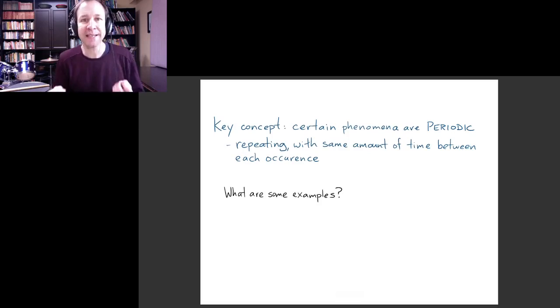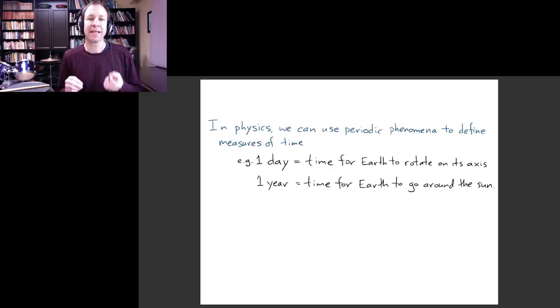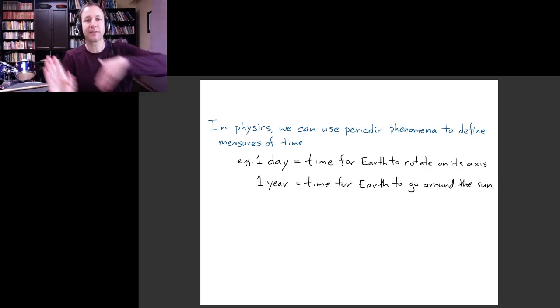A key concept here is that certain phenomena in our world are what we'd call periodic. They're repeating and they repeat over and over again with the same amount of time for each occurrence. What are some examples of that? Well, maybe the most important kind of fundamental example is the rising and setting of the sun.